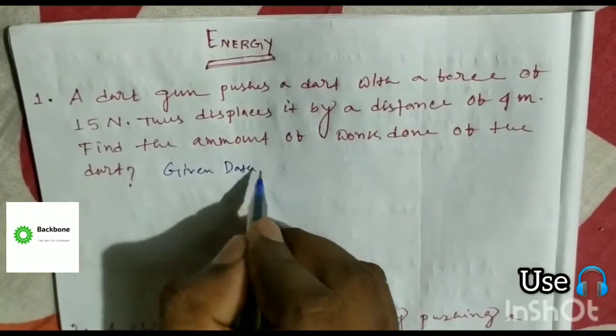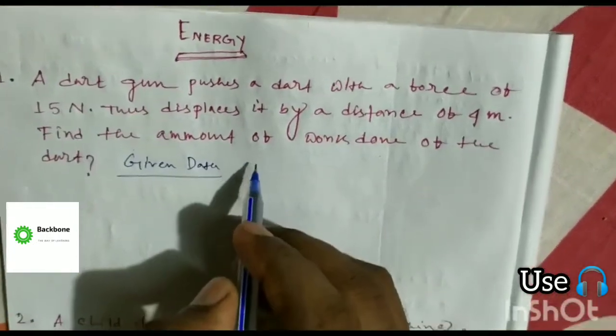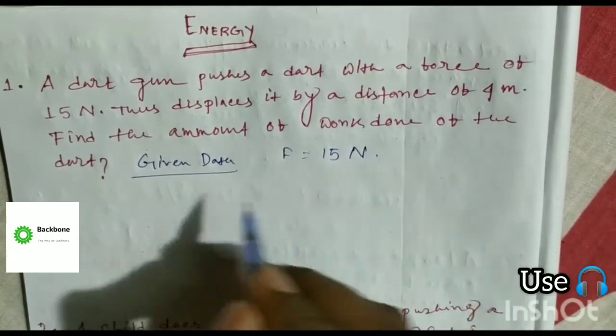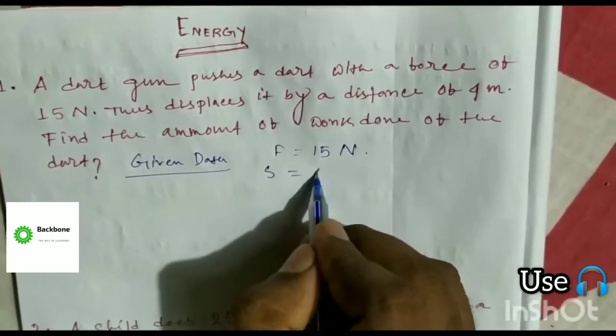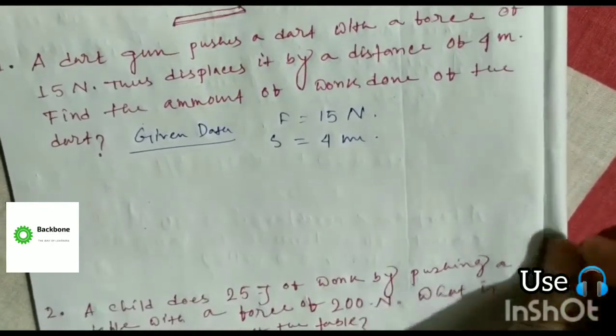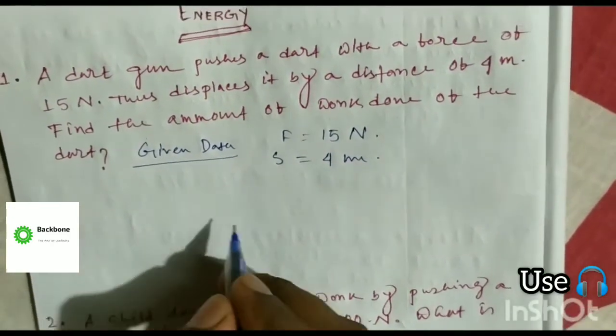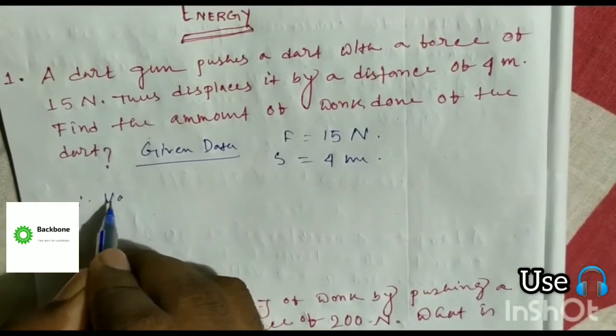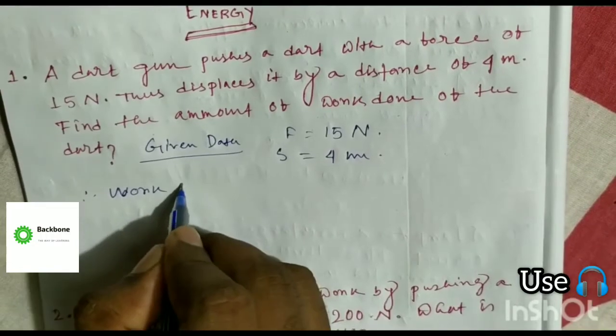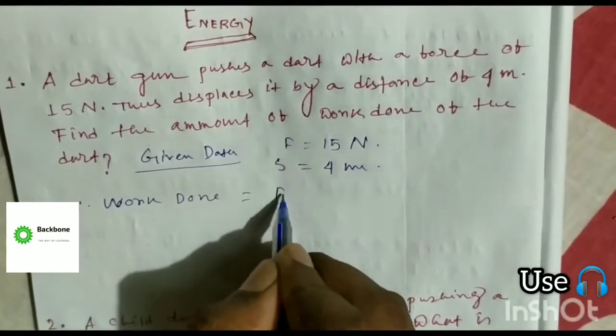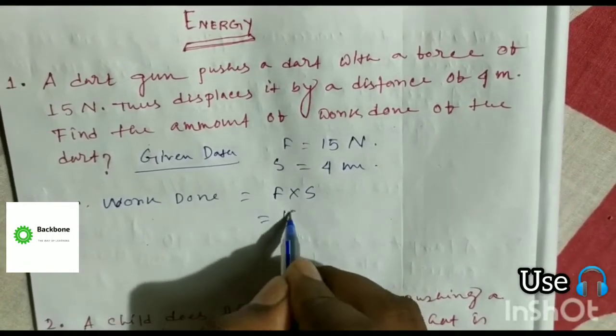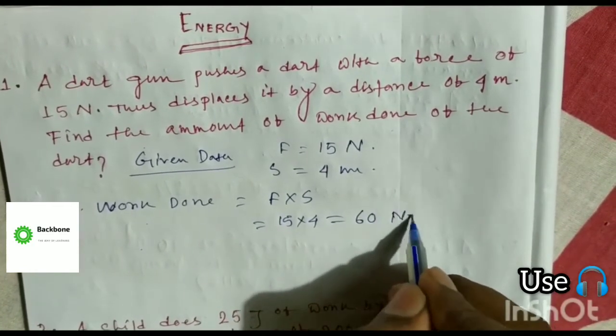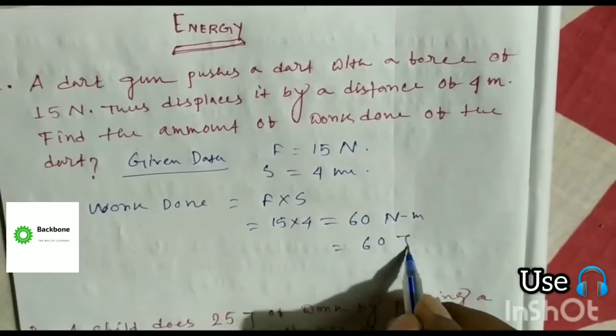Here given data: F is equal to 15 N and S displacement is equal to 4 meters. Therefore, value of work done is F into S, 15 into 4, equals 60 Nm or 60 J. This is the answer.